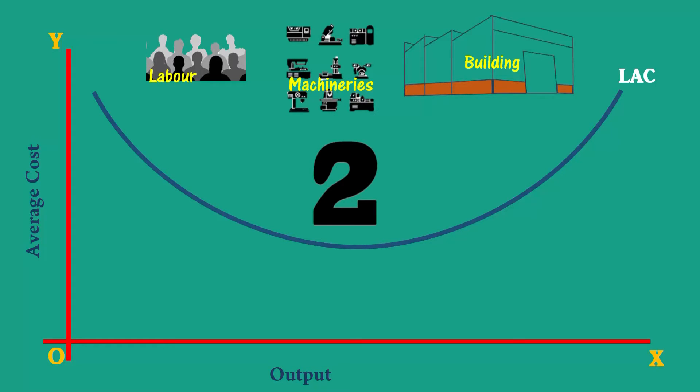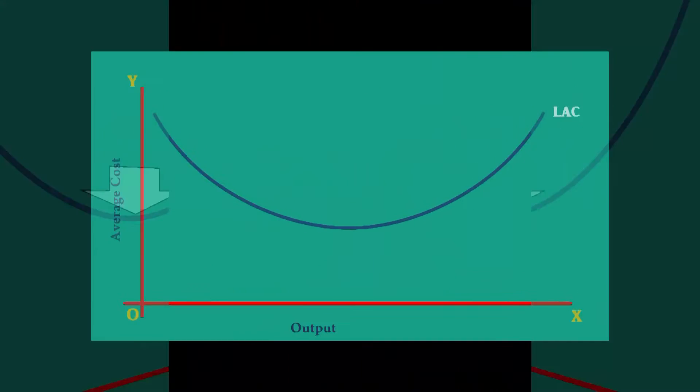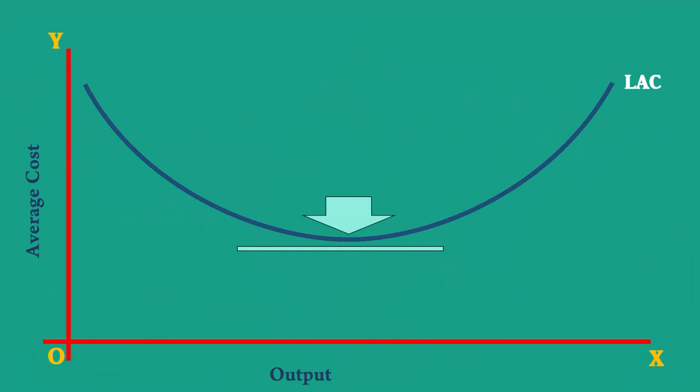Second, the U shape of the short run average cost curve is pronounced at the bottom. The bottom of the long run average cost curve is relatively flat.